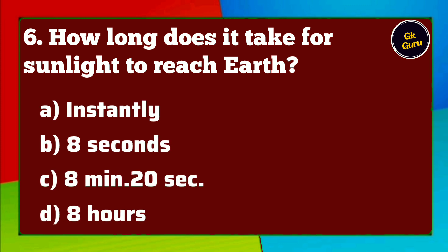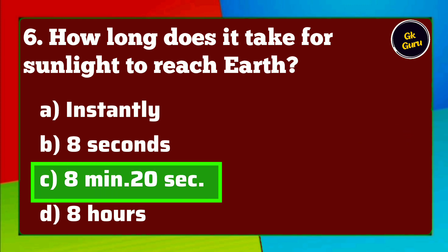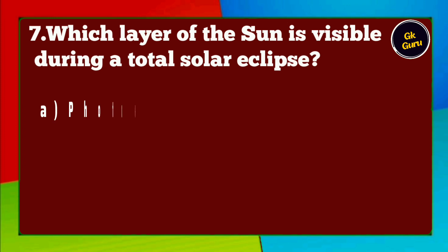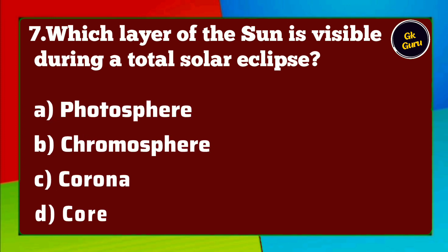How long does it take for sunlight to reach Earth? A. Instantly B. 8 seconds C. 8 minutes and 20 seconds D. 8 hours. Answer C. 8 minutes and 20 seconds.